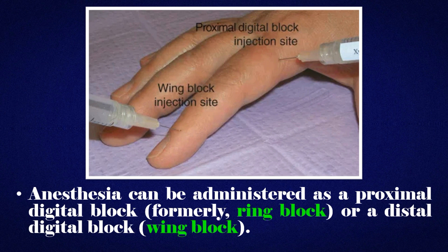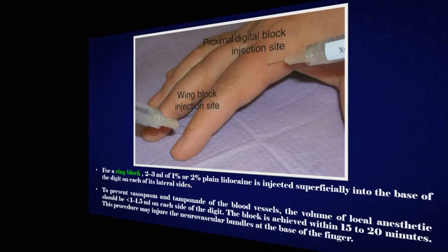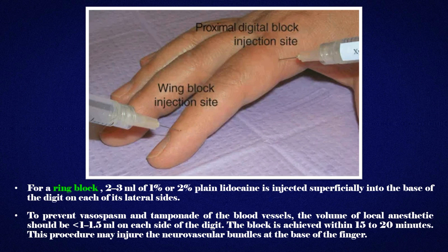Anesthesia can be administered as a proximal digital block (ring block) or a distal digital block (wing block). For a ring block, 2–3 ml of 1% or 2% plain lidocaine is injected superficially into the base of the digit on each of its lateral sides. To prevent vasospasm and tamponade of the blood vessels, the volume of local anesthetic should be less than 1 to 1.5 ml on each side. The block is achieved within 15–20 minutes.